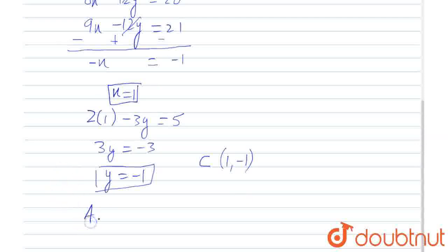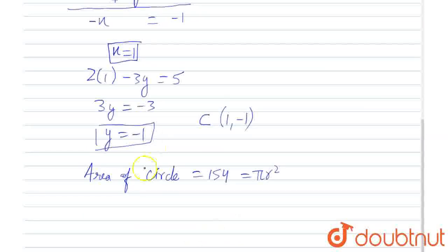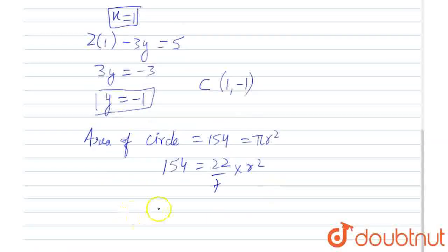So, we can find the radius from the area of the circle. Area of the circle equals 154, which equals pi r squared, and then 154 equals 22 by 7 times radius squared. And that is how we can find out the value of radius.